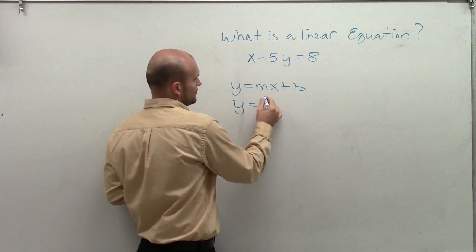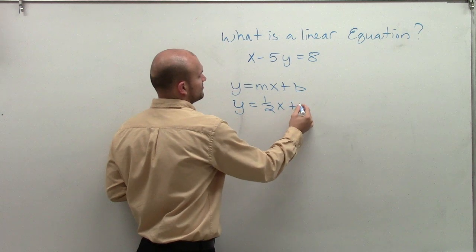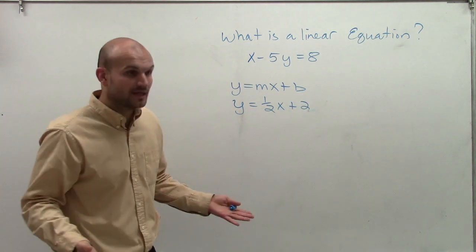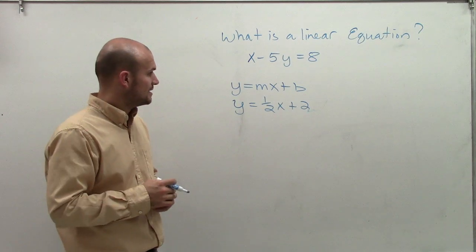So let's say I say y equals one-half x plus 2. So this is going to be a line. And I'll tell you a couple reasons why it's a line.